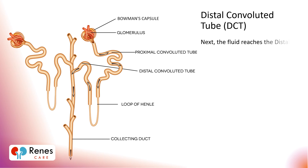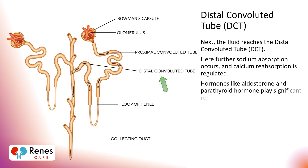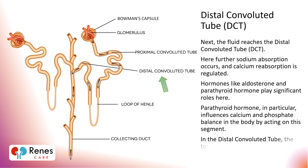Next, the fluid reaches the distal convoluted tube, or DCT. Here, further sodium absorption occurs and calcium reabsorption is regulated. Hormones like aldosterone and parathyroid hormone play significant roles here. Parathyroid hormone, in particular, influences calcium and phosphate balance in the body by acting on this segment. In the distal convoluted tube, the term distal refers to its location, which is distant from the glomerulus.